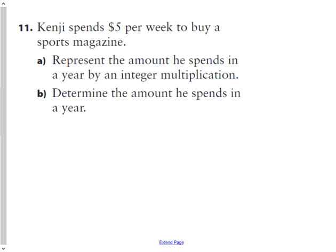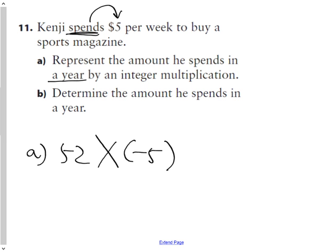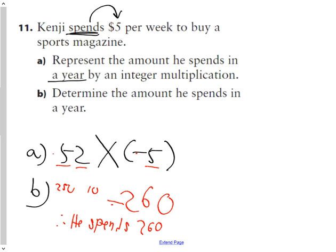Question 11. Kenji spends $5 a week to buy a sports magazine. Represent the amount he spends in a year by an integer multiplication. There are 52 weeks in a year, and since he is spending $5 a week, it is going to be 52 weeks of spending $5, so we're going to represent that with an integer sign of negative 5. And then B says calculate what that's going to be. 50 times 5 is 250, 2 times 5 is 10, you put those together, you get 260. Will it be a positive or negative? It is definitely negative, because a positive times a negative is a negative. Therefore, he spends $260 per year.